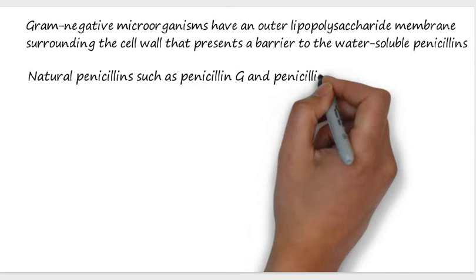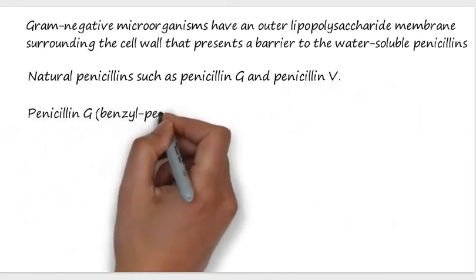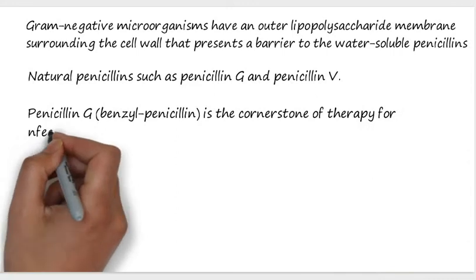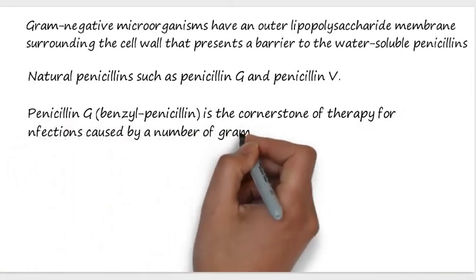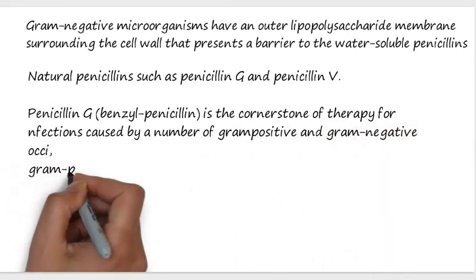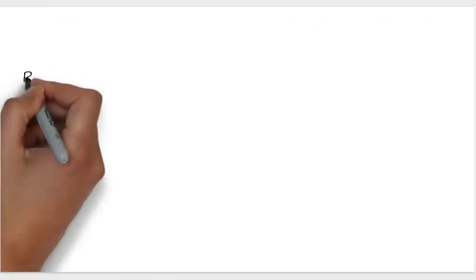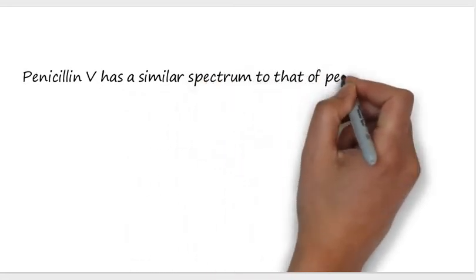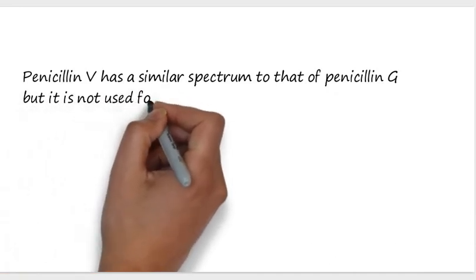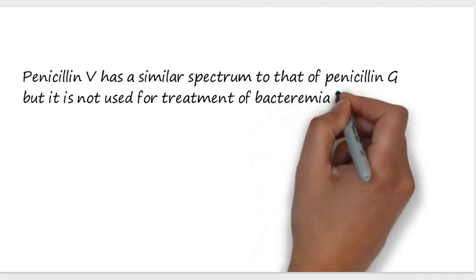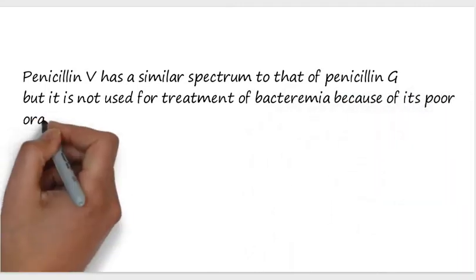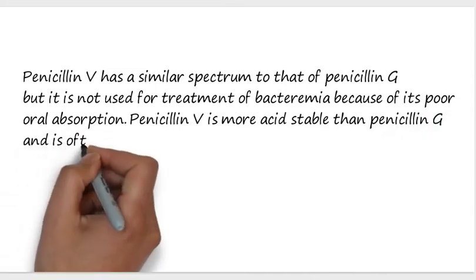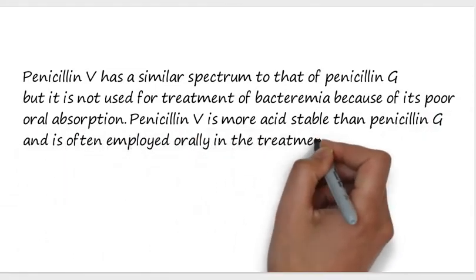Natural penicillins such as penicillin G (benzylpenicillin) and penicillin V: benzylpenicillin (penicillin G) is the cornerstone of therapy for infections caused by a number of gram-positive and gram-negative cocci, gram-positive bacilli, and spirochetes. Penicillin V has a similar spectrum to penicillin G, but is not used for the treatment of bacteremia due to its poor oral absorption. Penicillin V is more acid-stable than penicillin G and is often employed orally in the treatment of infections.